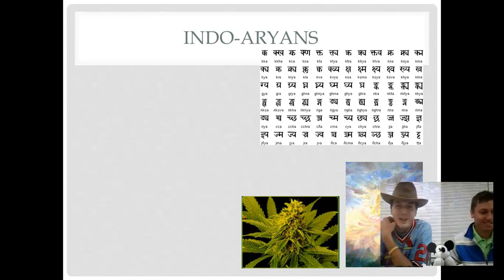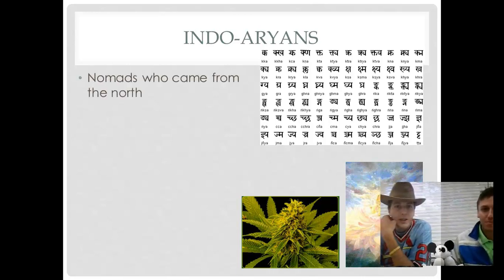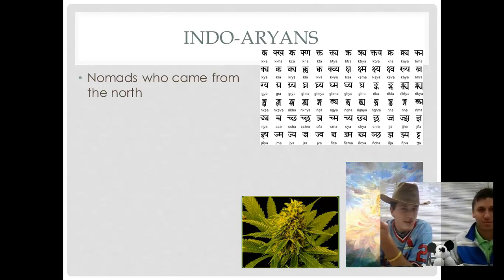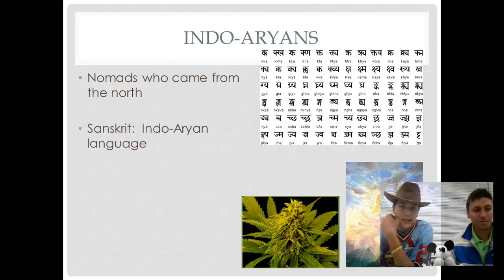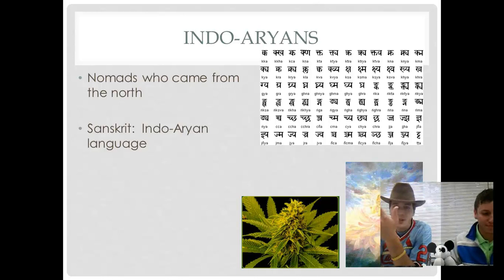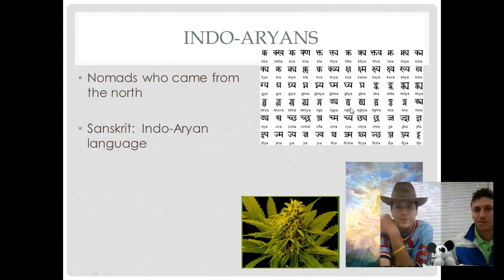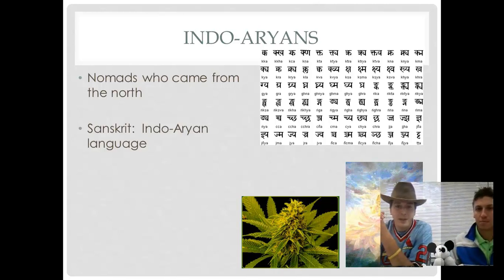The next group of people who came into the area are called Indo-Aryans, and these are the people who brought a lot of new technologies into ancient India. The Indo-Aryans themselves were nomads — people who travel around a lot — and these particular ones came from the north down into India. We've talked about two other languages in this class: cuneiform for the Mesopotamians and hieroglyphics for the Egyptians. The Indo-Aryans used a language called Sanskrit. You'll notice at the top right these are some Sanskrit symbols — a lot of pictures and symbols that represent certain things.